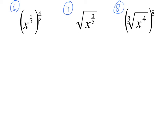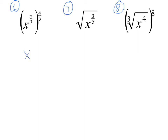Now we're going to apply that same property. The property again: x squared raised to the fourth power is x to the eighth. All we're going to do is apply that to these problems. The first one is simple: x to the two-thirds raised to the four-fifths. We just multiply our exponents — two-thirds times four-fifths — which gives us x to the eight-fifteenths.